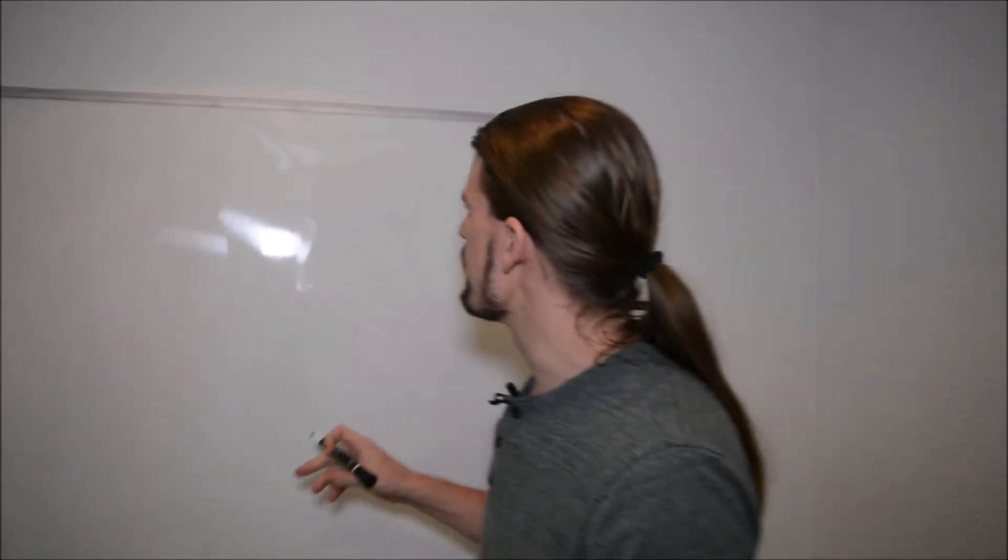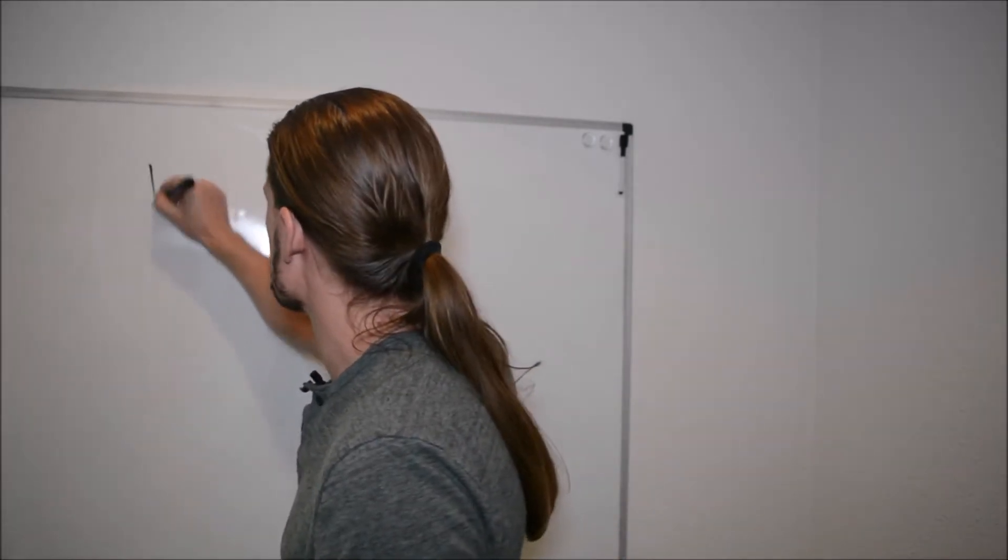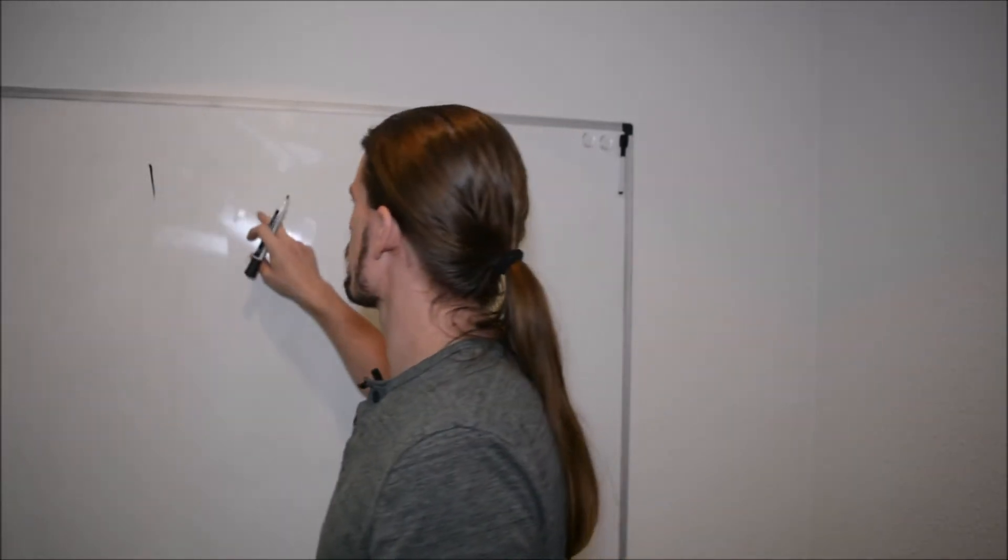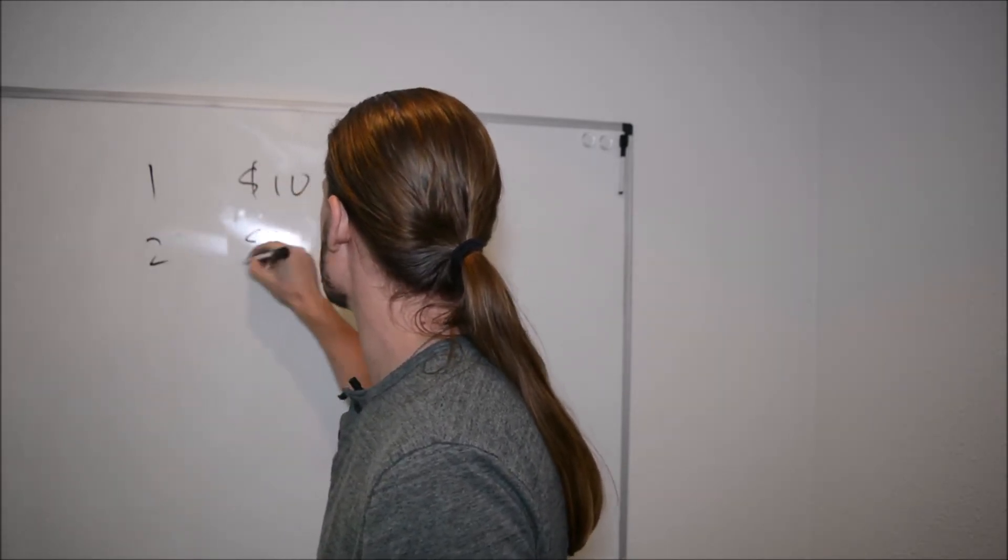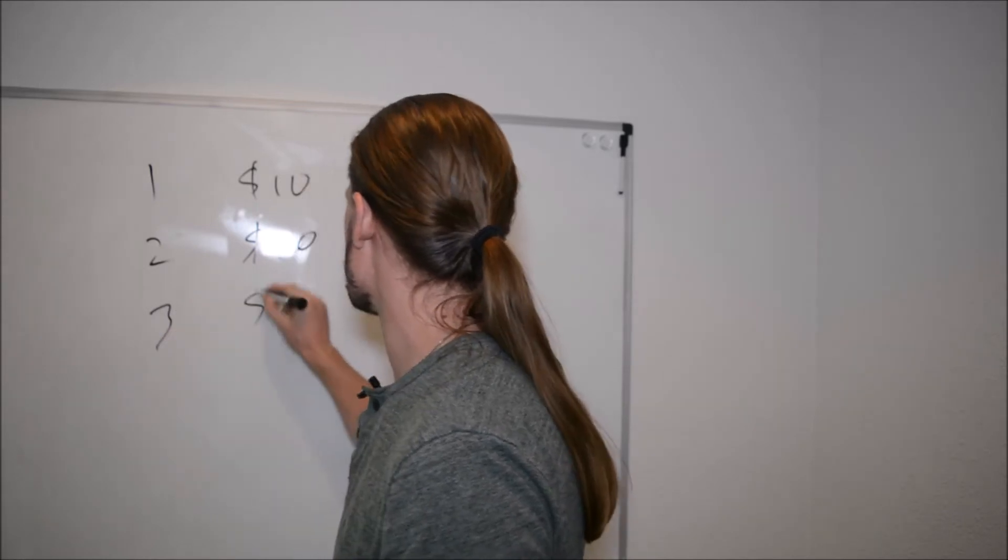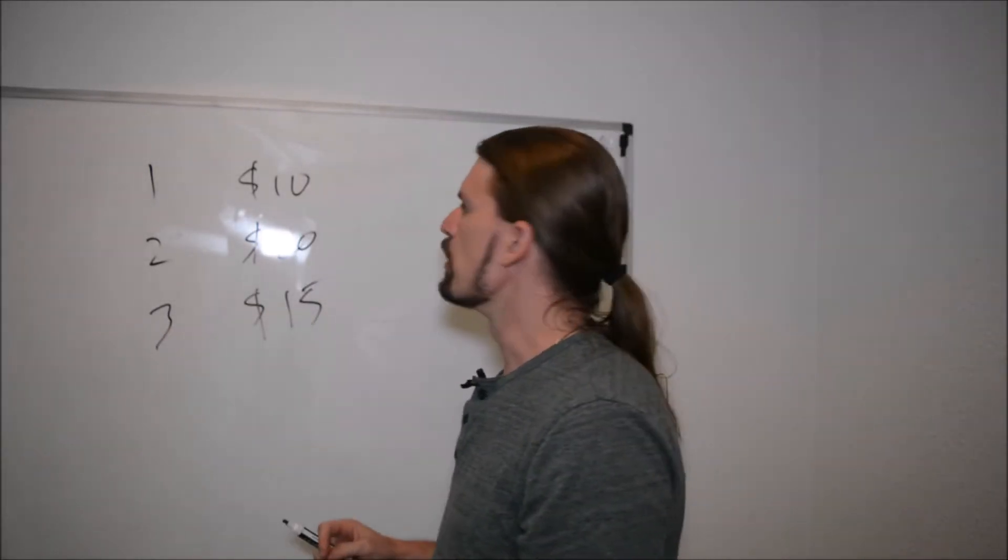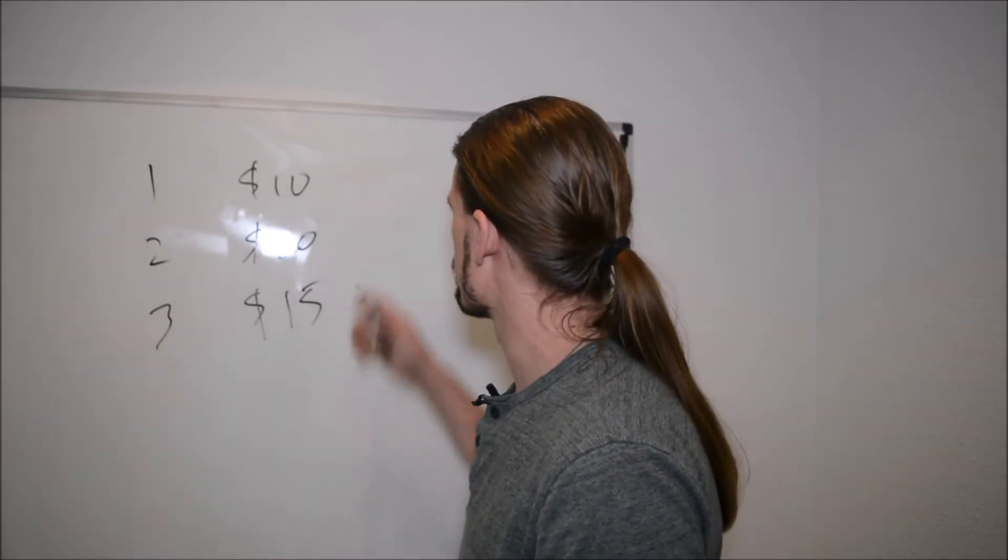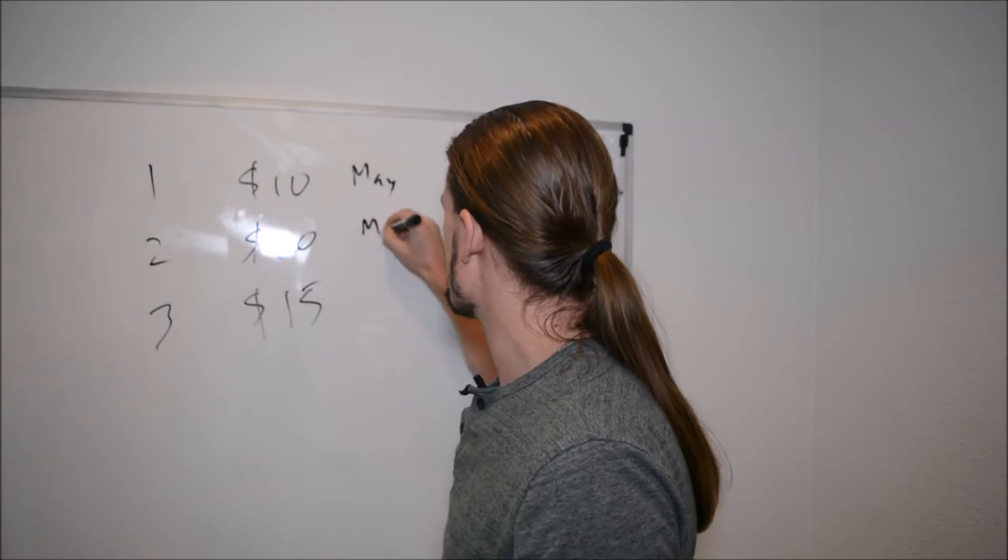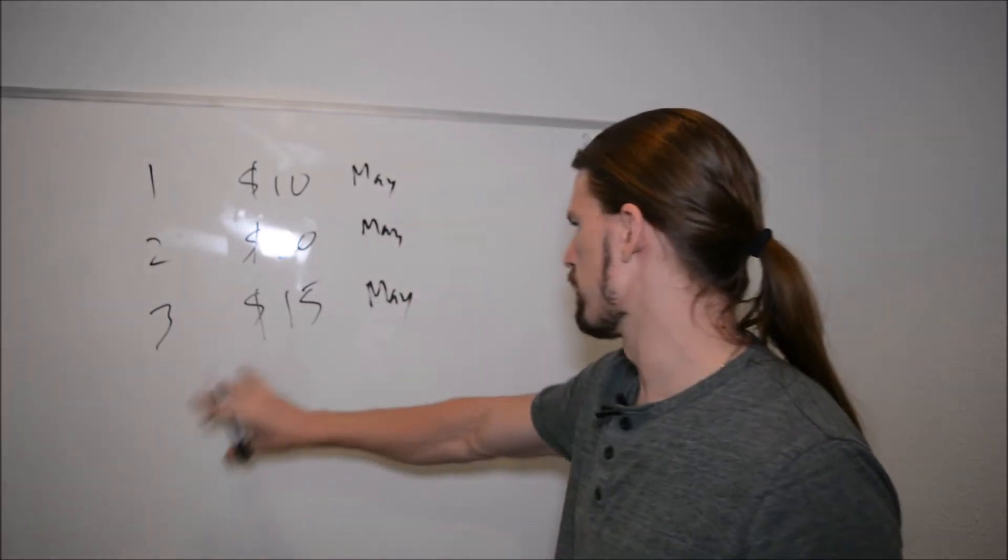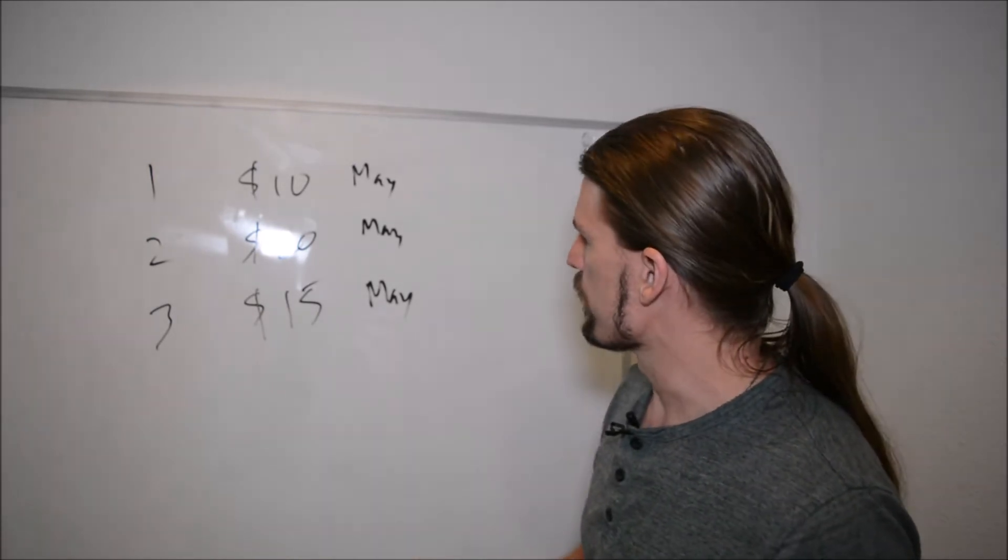So what you might see is a table that has, let's say this is your transaction. You have transaction one for $10 and then transaction two for $20 and transaction three for $15, etc. And then you have the month here. So let's say that this is all May, May, May.